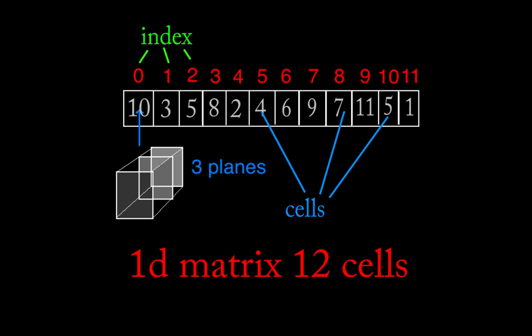Every cell can contain more than just one single value — in fact, it can contain up to 32 different values. The different values stored inside a single cell are said to be lying inside different planes. The index for the planes starts from zero as well. You can imagine those planes as different layers of data, every one of them lying inside the single cell.